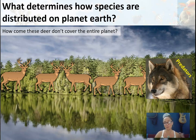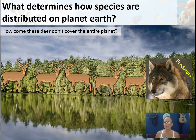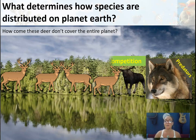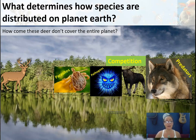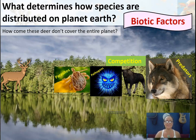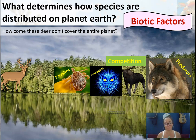There might be an interaction between predators and prey. If we think about deer, why don't they cover the entire planet? One reason could be predators, another could be competition with other species. It could also be pathogens — viruses, bacteria, parasites — and other parasites. These are all factors that limit the size of a deer population and determine where you can find it on Earth.